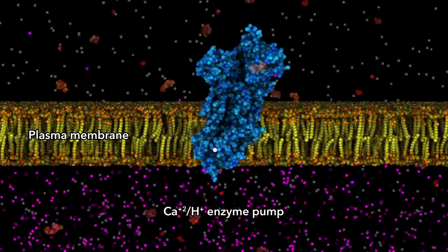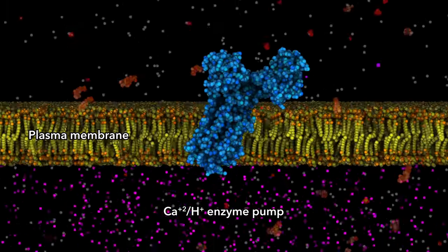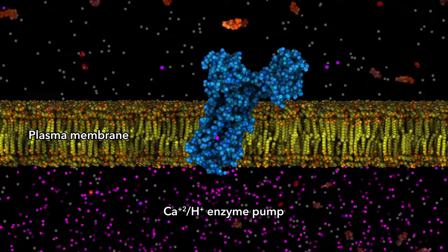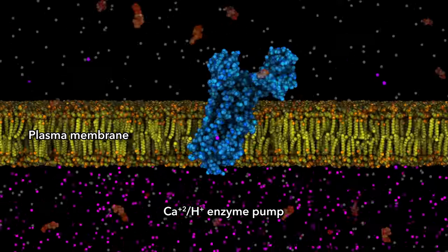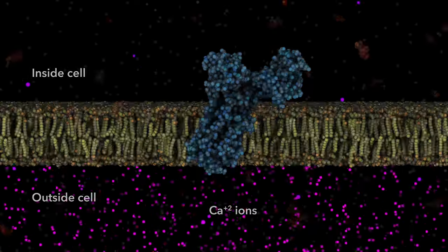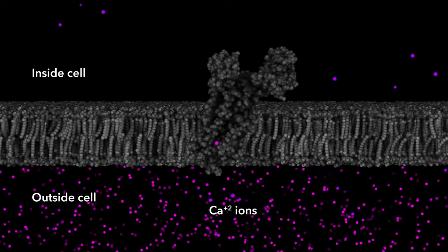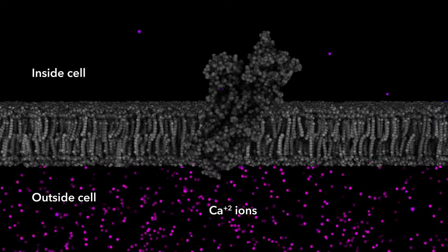The flow of calcium ions controls muscle contraction, nerve transmission, gene regulation, and cell death. Because of enzyme pumps, the concentration of calcium ions inside your living cells is 10,000 times lower than outside.